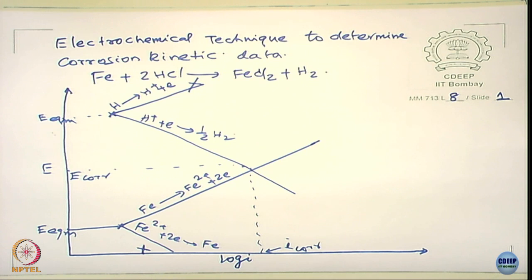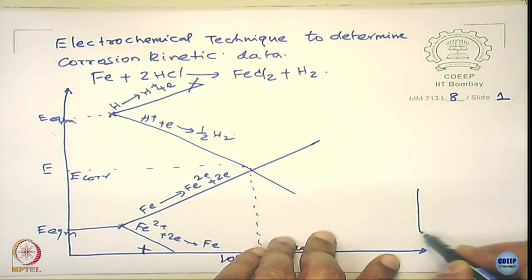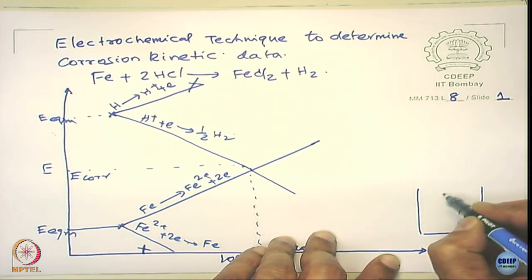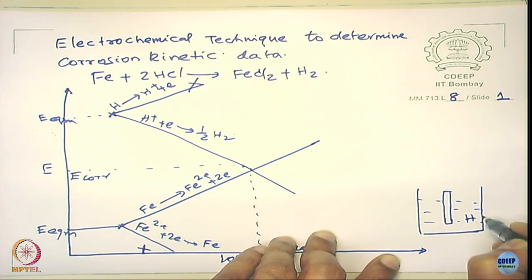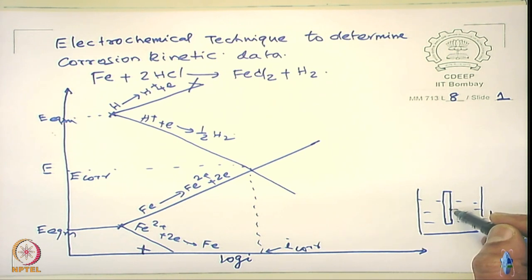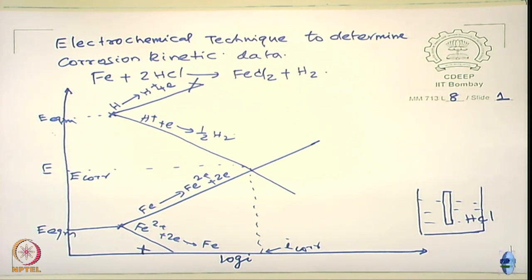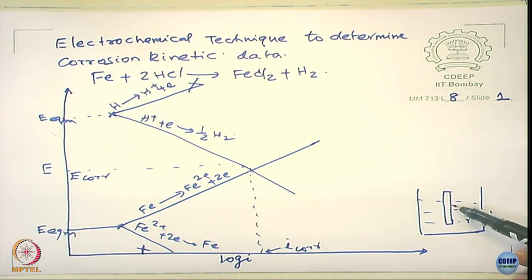To start with, let us look at a simple system. I just draw schematically. Suppose I represent this corrosion process using this schematic diagram. So this is iron in hydrochloric acid — it is getting corroded, and for simplicity it is de-aerated. If I measure the potential of this one when it is corroding using a voltmeter or electrometer and a reference electrode, what will the potential be called? In this case, this is called the corrosion potential.